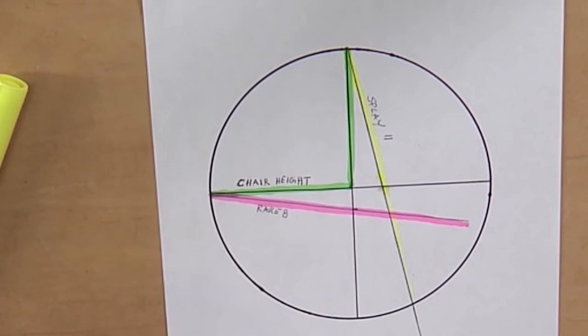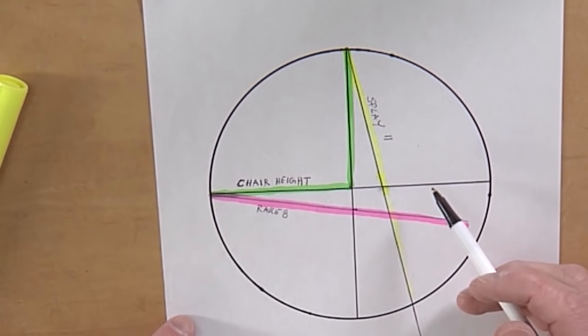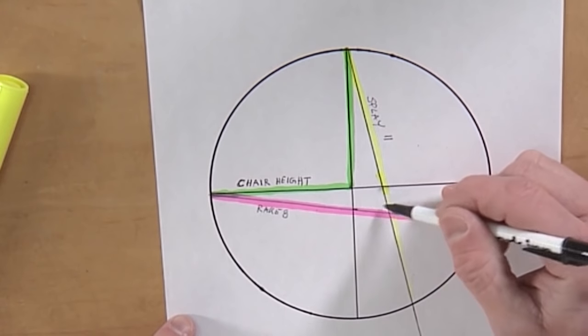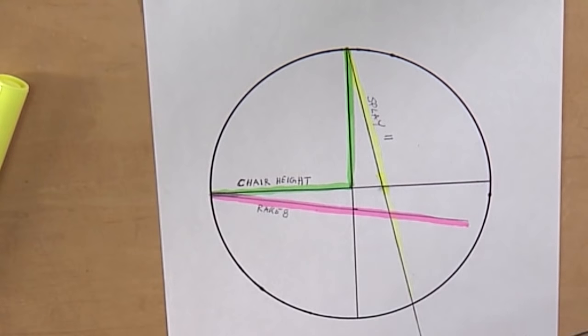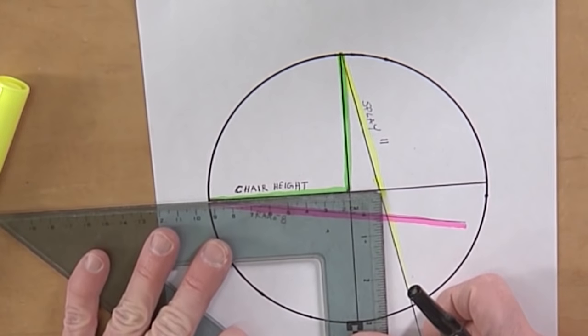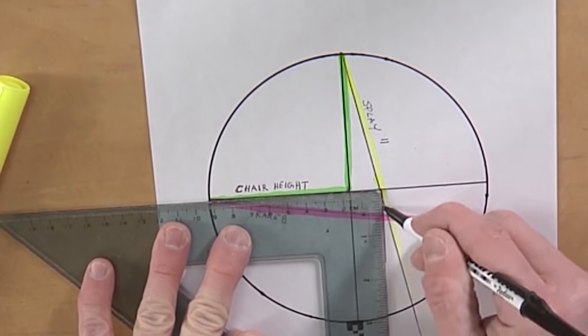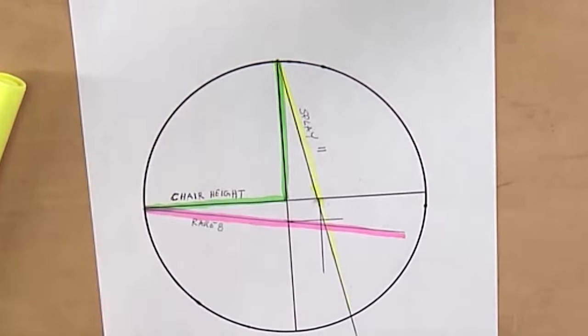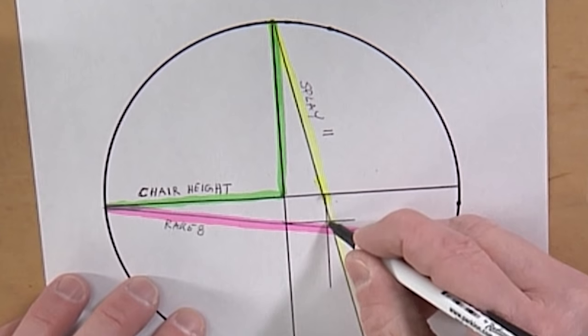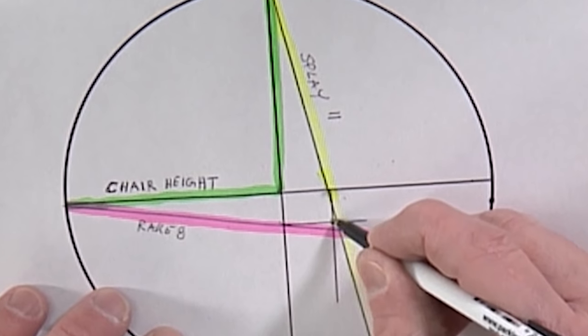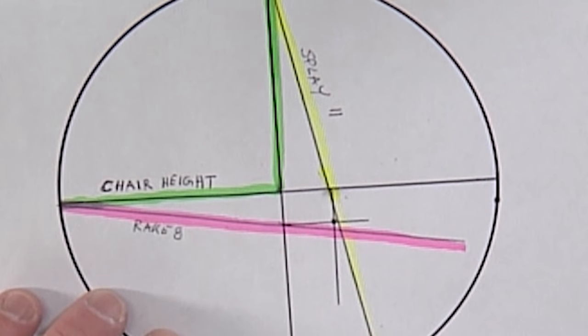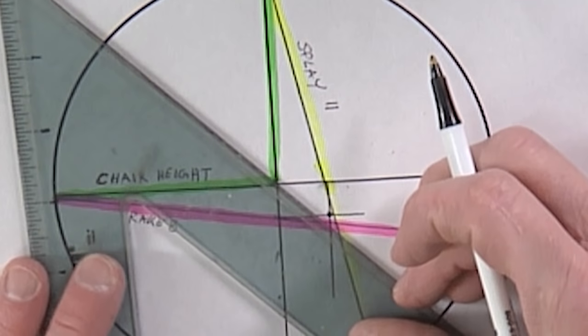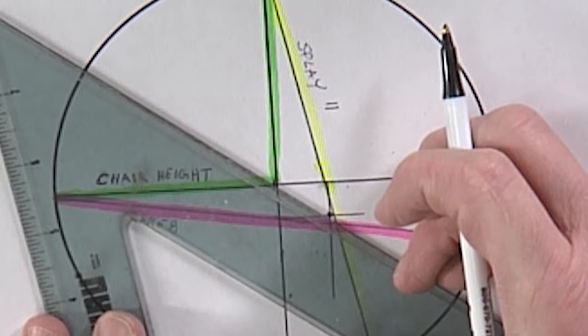So now here's where you have to really pay attention. What I want to do is I want to figure out the resultant angle. And what that means is this line from this point and this point need to connect. So I need to do that at 90 degrees. Right here. That is the point that I want to be at. So what I'll do now is I'm going to connect this point to that point. So basically I'm splitting my rectangle in half.